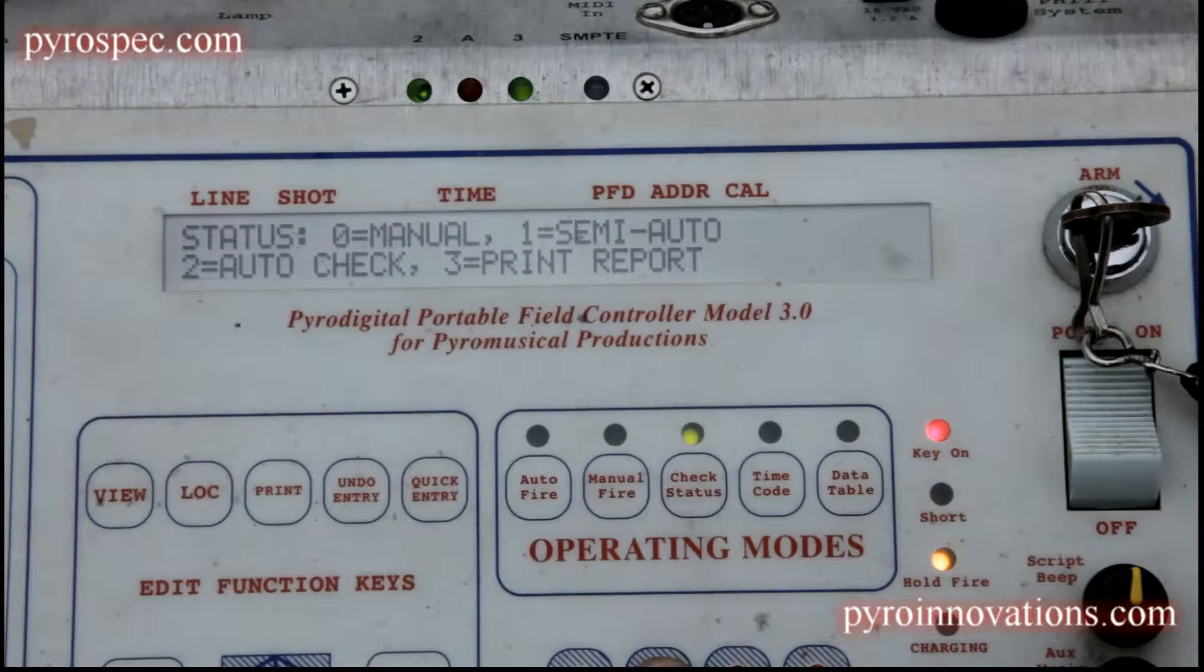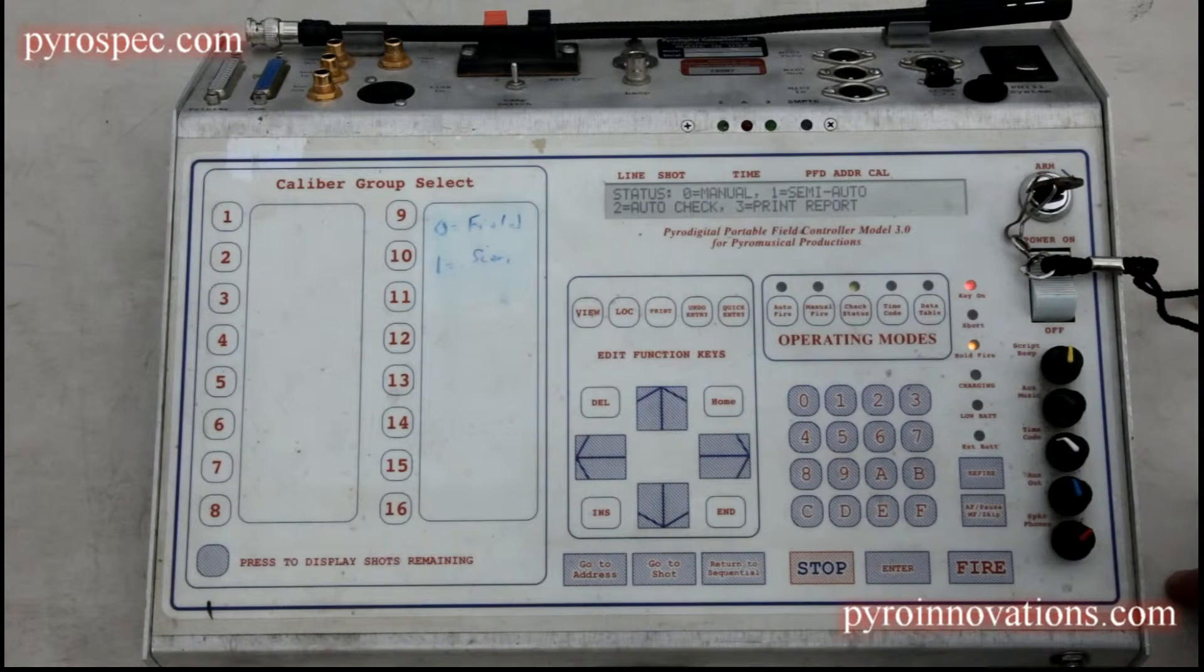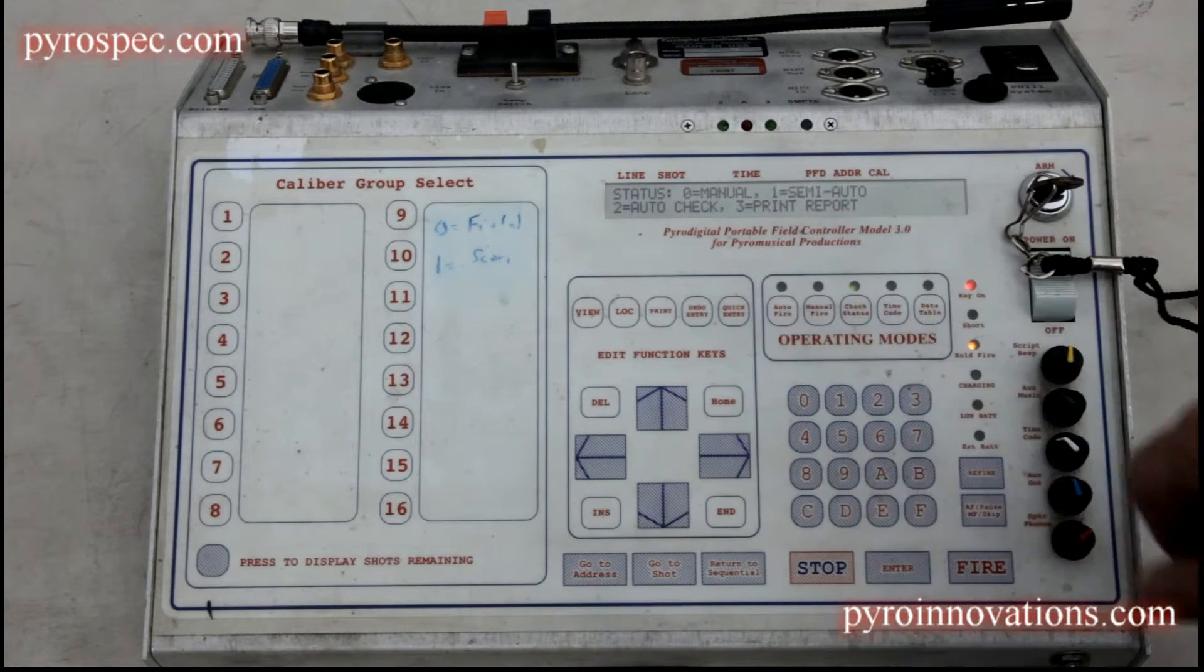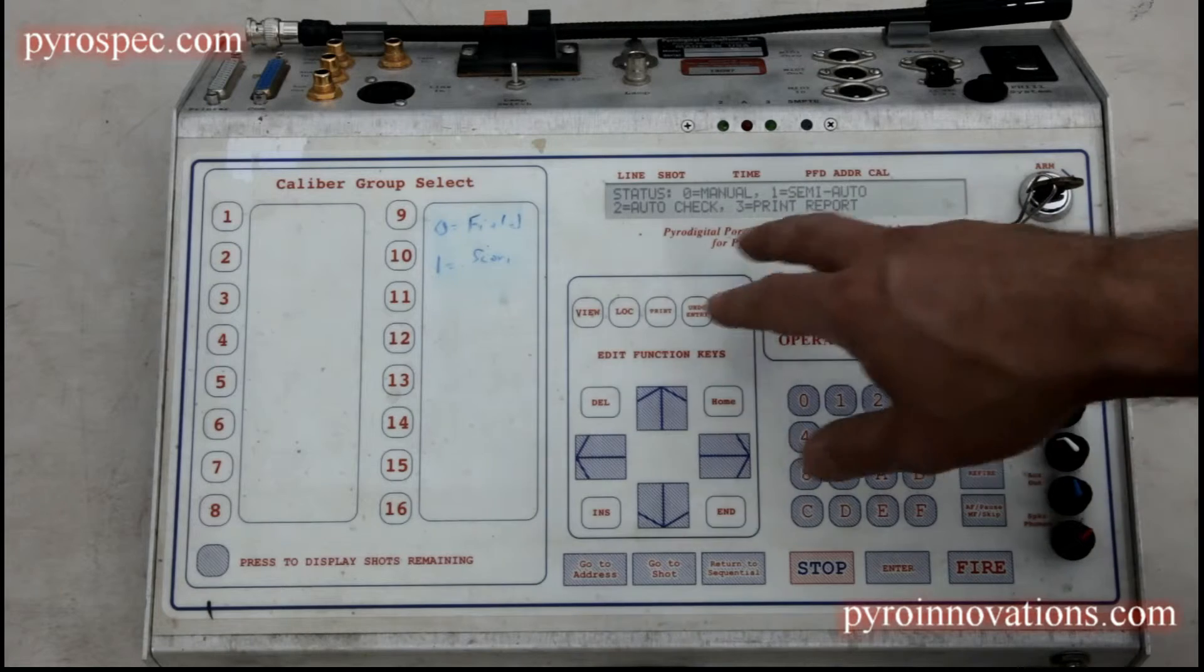Now there's a few different options for running a status check, but we're only going to talk about the two that are used most commonly: semi-auto and auto check.